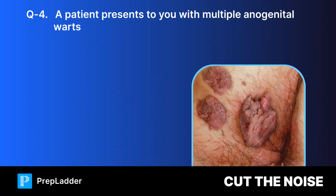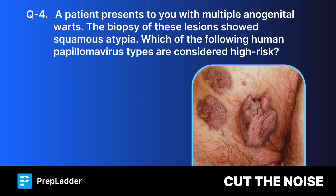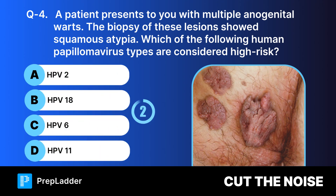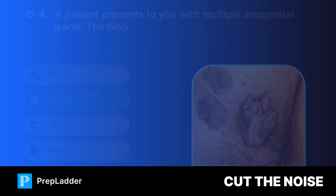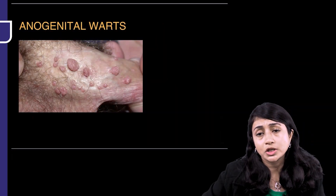Question 4: A patient presents with multiple anogenital warts. The biopsy of these lesions shows squamous atypia. Which HPV types are considered high risk? The correct answer is HPV 18. When a patient has anogenital warts, think of STI — take a sexual history and rule out sexual transmission.